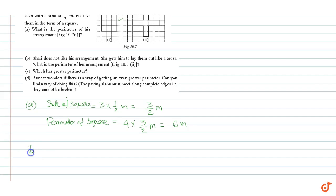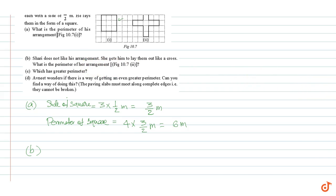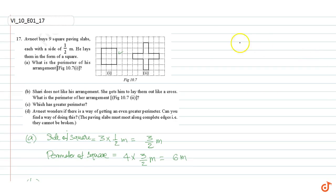Part B. Sharia does not like this arrangement. She gets him to lay them out like a cross. What is the perimeter of her arrangement? We have to find out the perimeter of this arrangement.